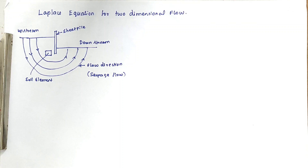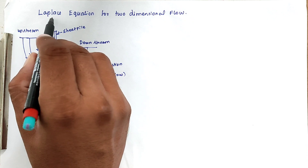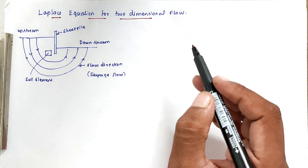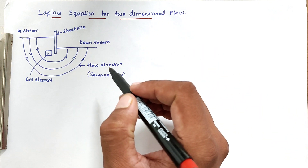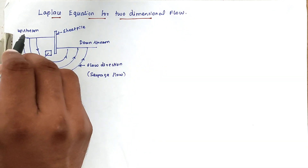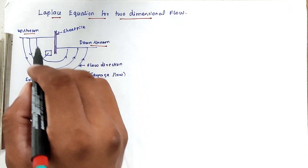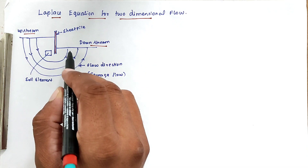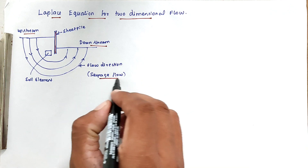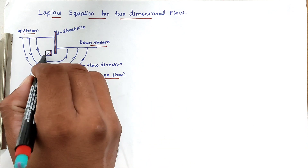Hello friends, welcome to Student Engineering Exam. Today we are going to see the theory related to soil mechanics on the topic of Laplace equation for two-dimensional flow. We can analyze the seepage pressure and seepage flow using the Laplace equation. We consider an upstream side and a downstream side, where a sheet pile is present, and the flow direction is from upstream to downstream through the soil — this is called seepage flow.